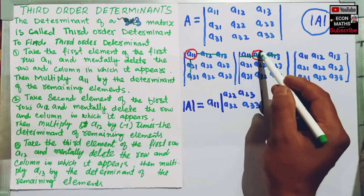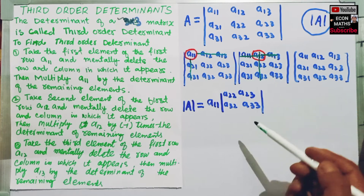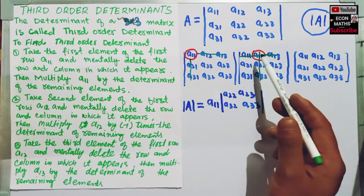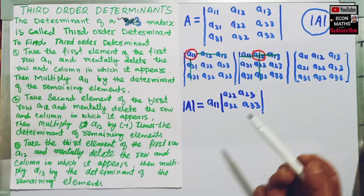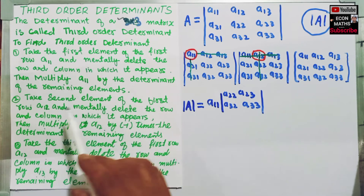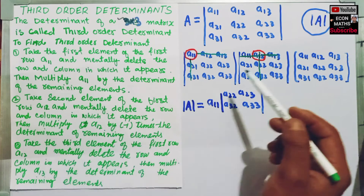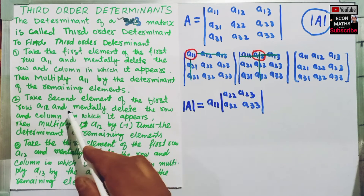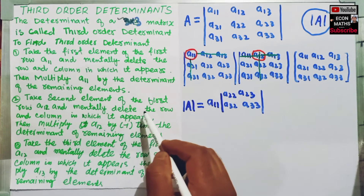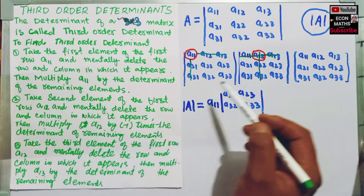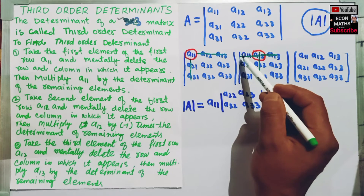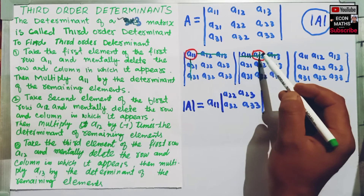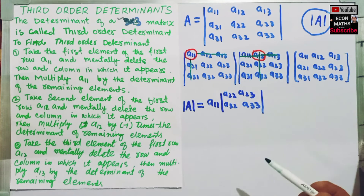We delete this row and this column in which it appears. We take the second element of the first row, that is A12, and mentally delete the row and the column in which it appears.